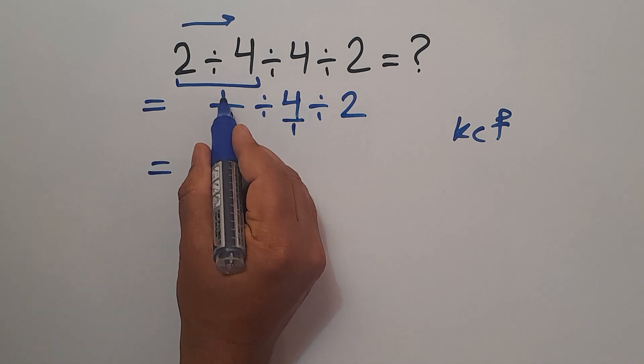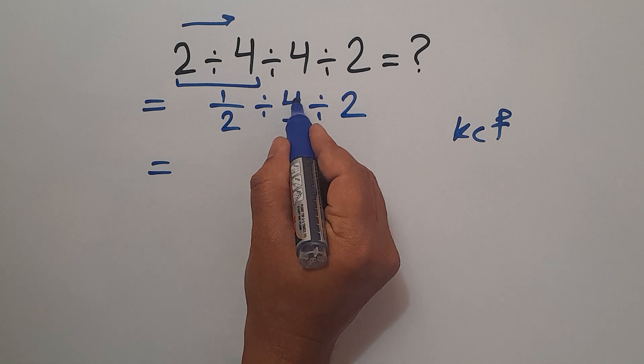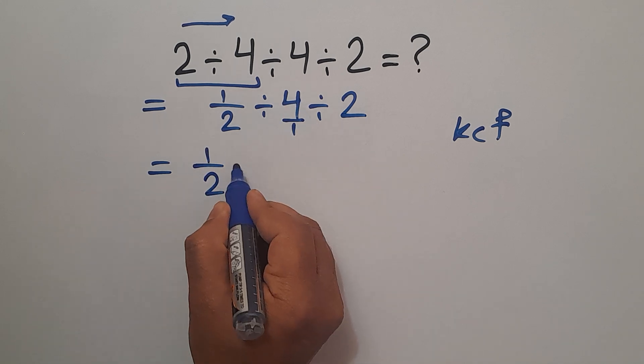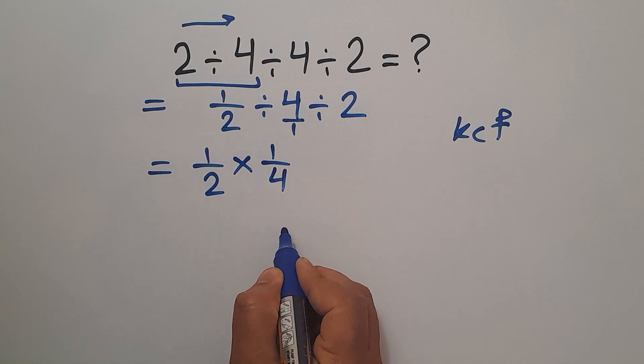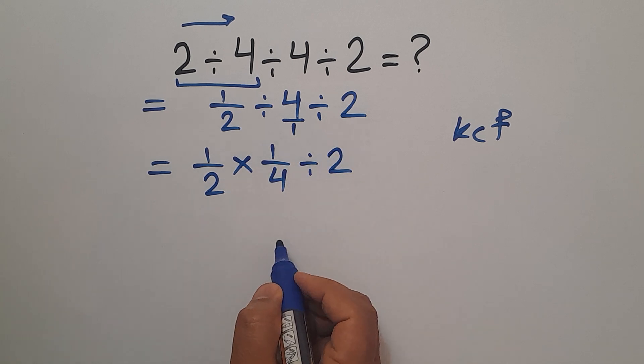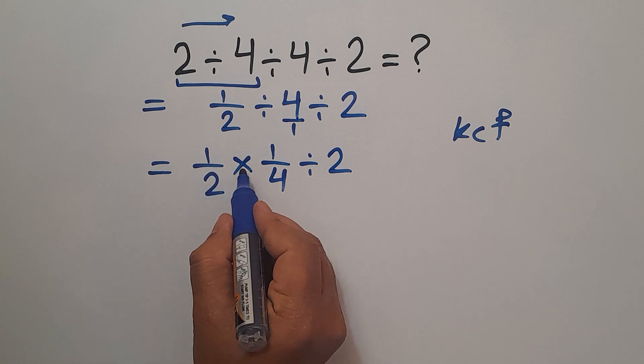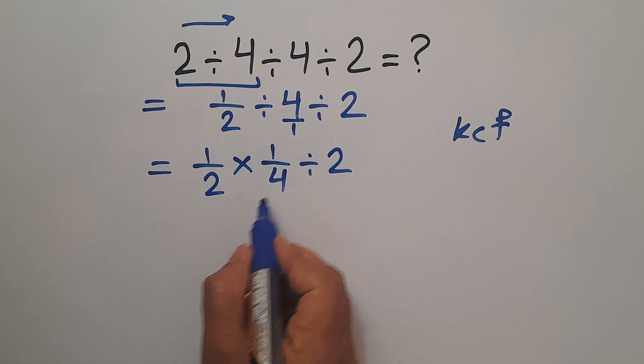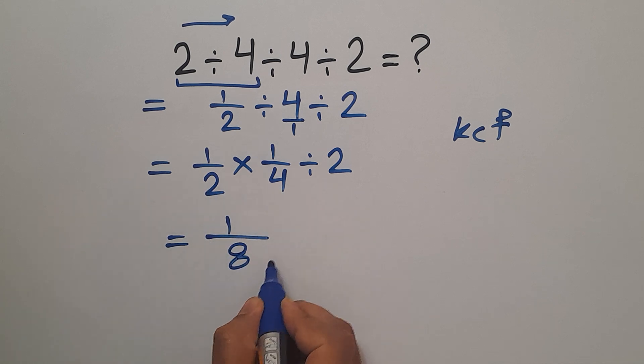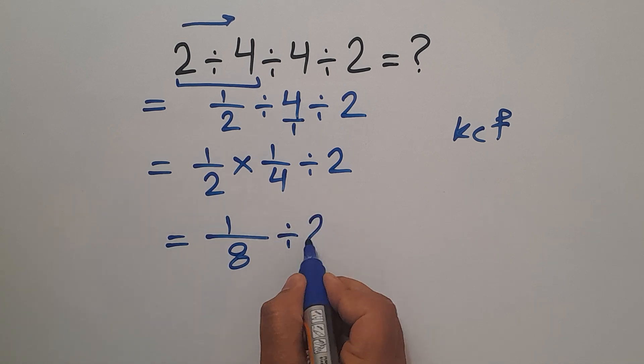So 1 over 2 divided by 4 over 1 can be written as 1 over 2 times 1 over 4, and we have divided by 2. 1 over 2 times 1 over 4 equals 1 over 8, and divided by 2.